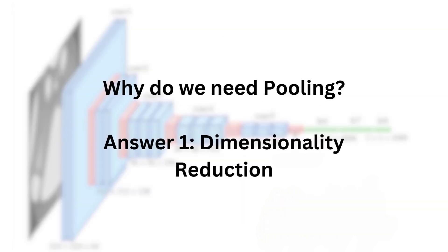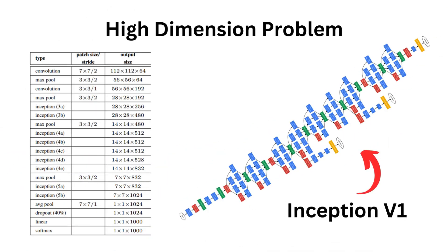Okay, so back to our original question. Why do we even need pooling? And the first answer to this is to apply dimensionality reduction throughout the network. Let's take, for example, this fairly deep network called InceptionNet, the first version of it. As you can see on the left, we have many layers and we see that we have a sort of high dimensionality problem to take care of.